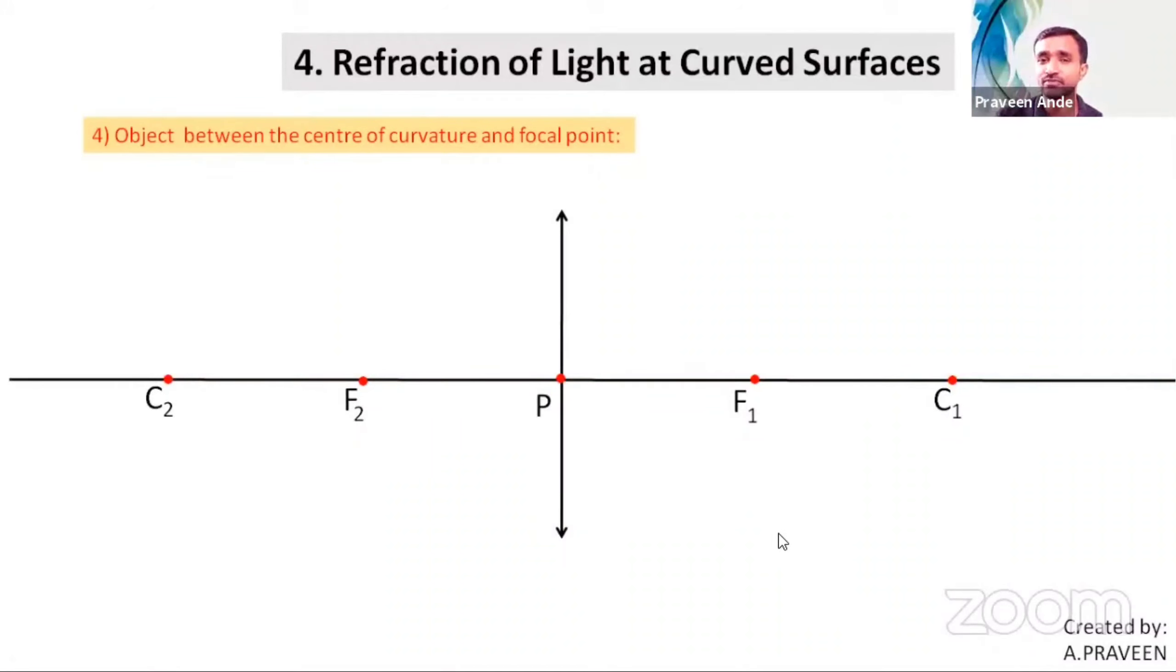Next, position the object. Where? Between F2 and C2 here. The height of the object is equal to the width of the scale, so draw an upward arrow.